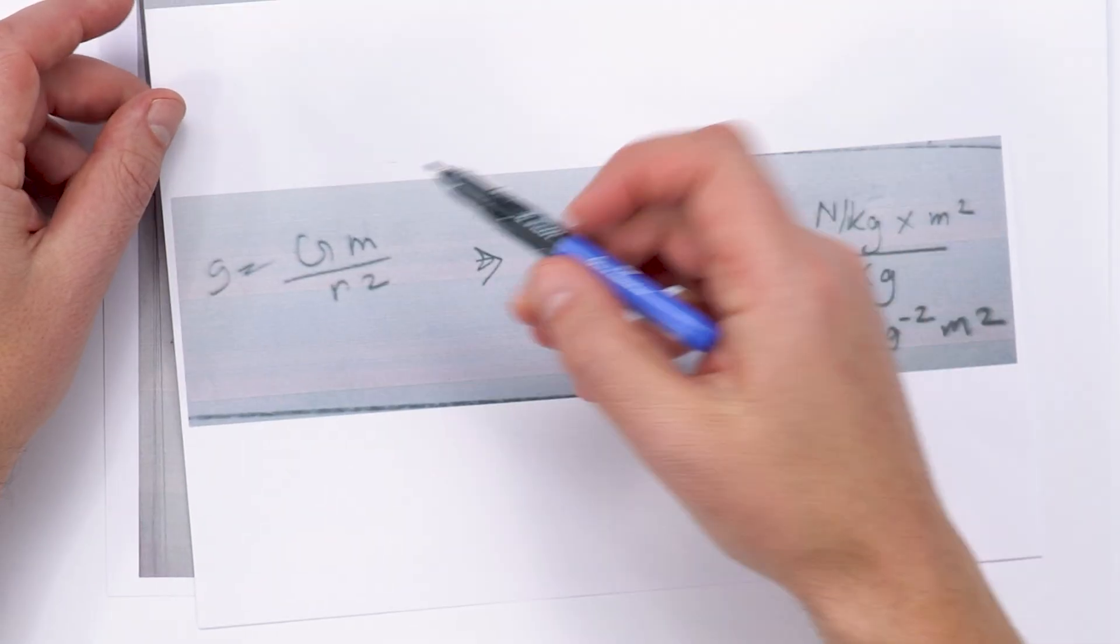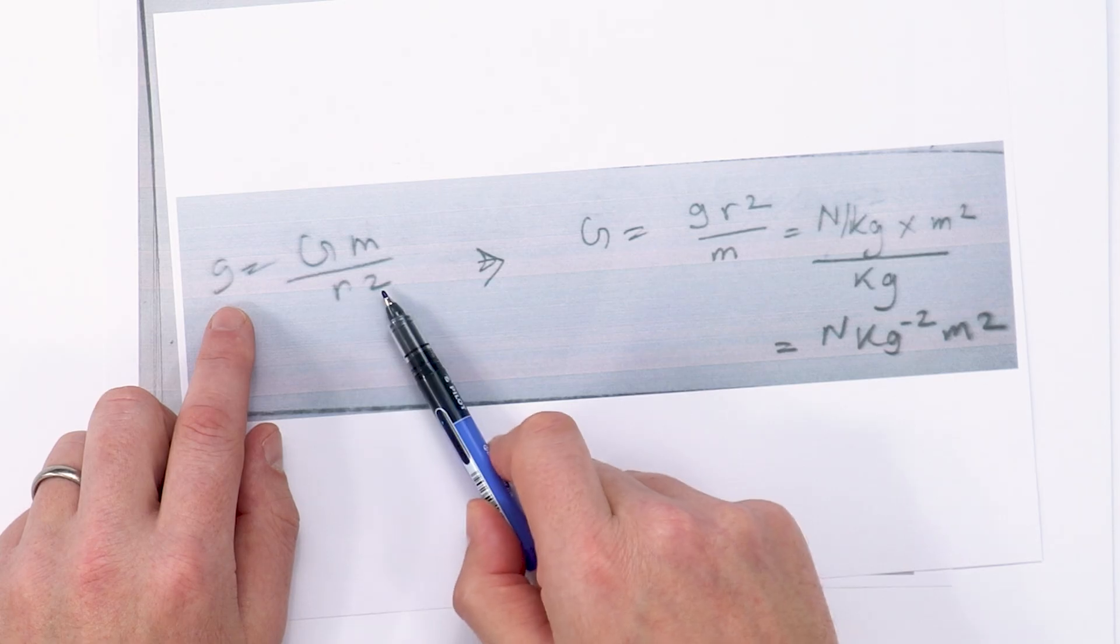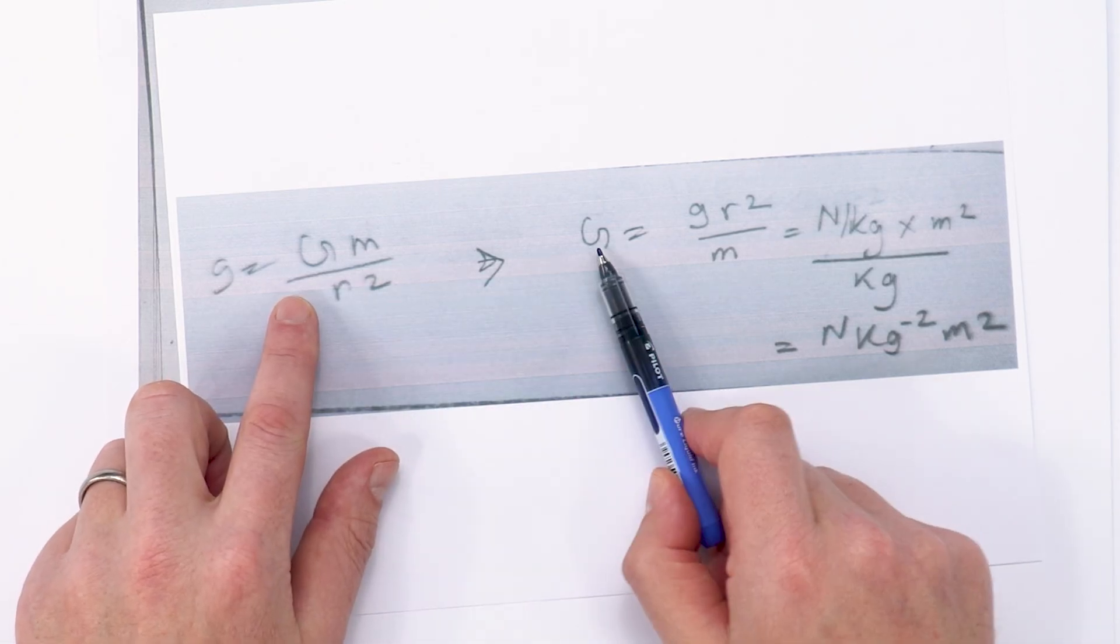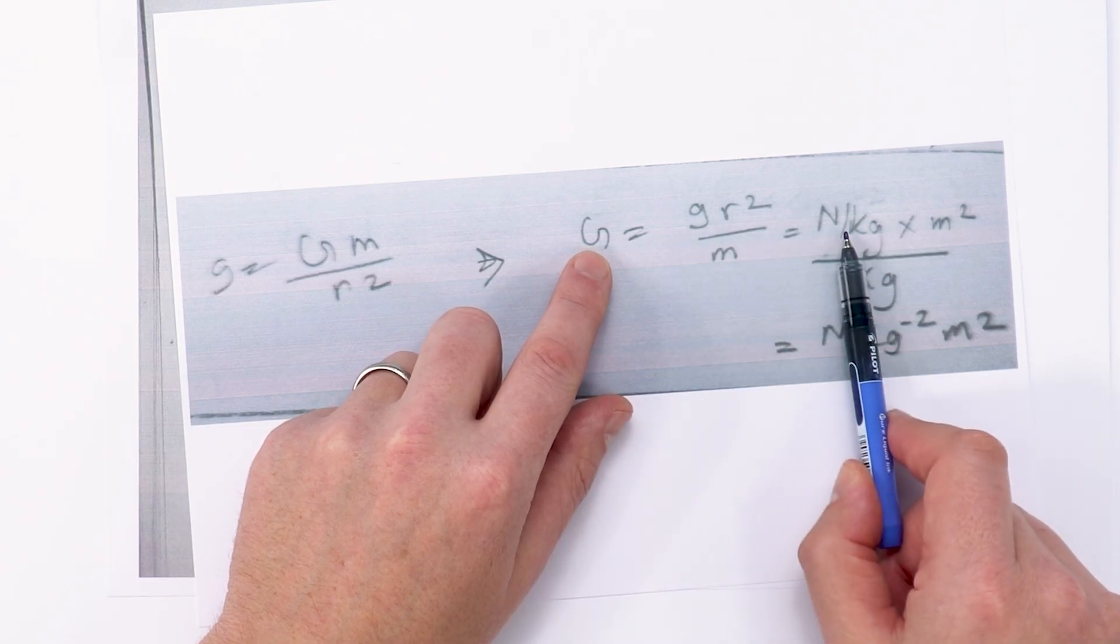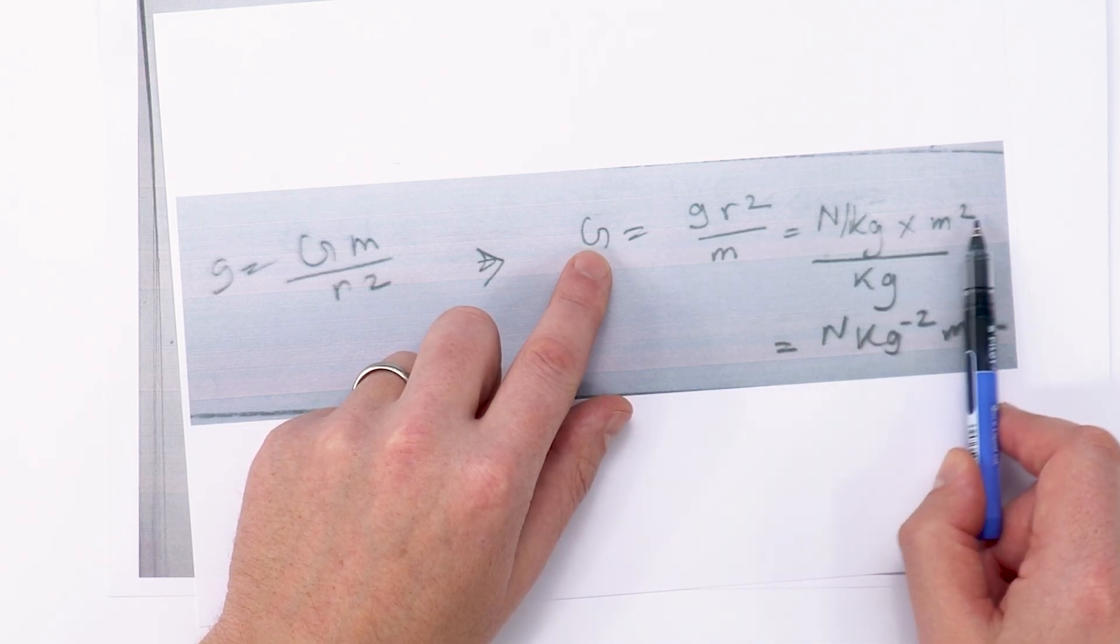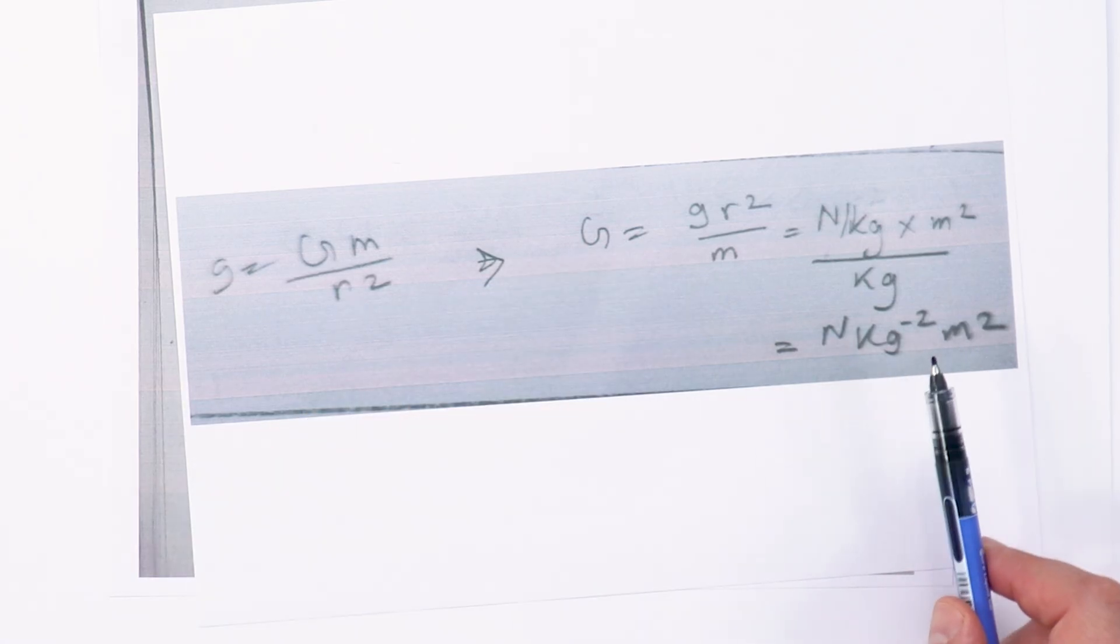This student here they started with little g is equal to gm over r squared which is another equation we can use. They've rearranged then to say that g is equal to gr squared over m and that's going to be newtons per kilogram times metres squared over kilograms which is newtons kilograms to the minus 2 metres squared.